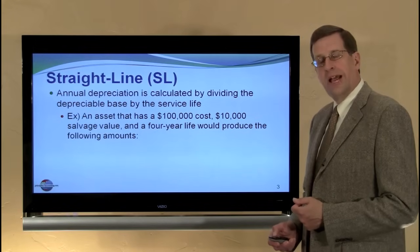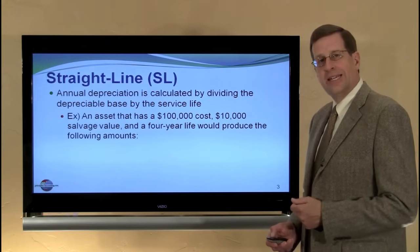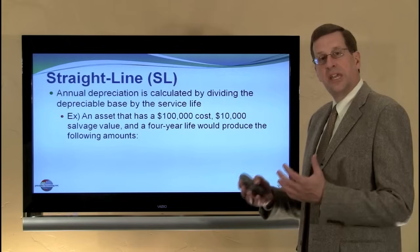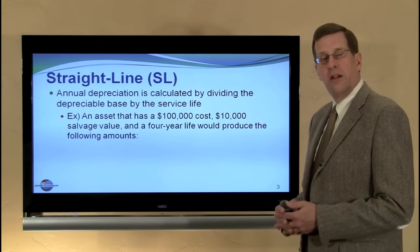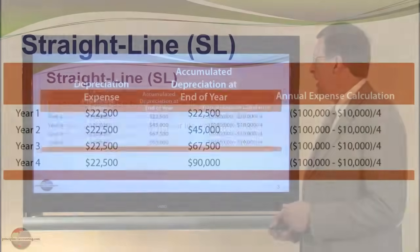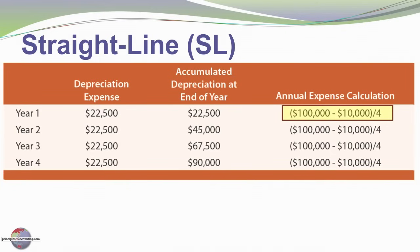Assume we have a $100,000 asset and a $10,000 salvage value, that gives us a $90,000 depreciable base, and we have a four-year life. Looking at our depreciation calculations, we'll take the depreciable base — $100,000 minus $10,000 — divided by four years, and get an annual depreciation charge of $22,500 per year.